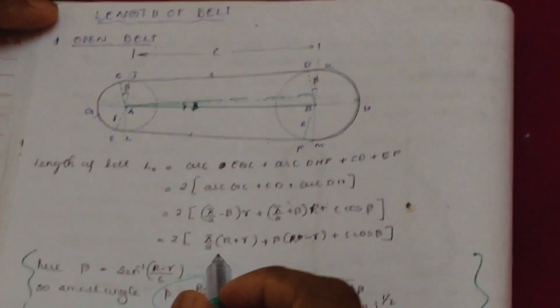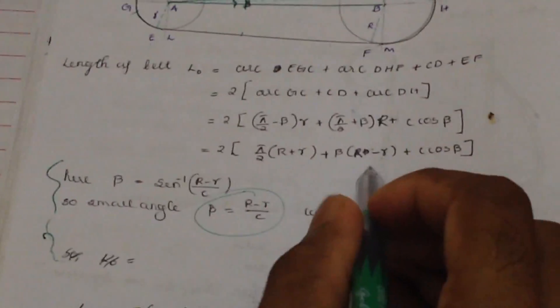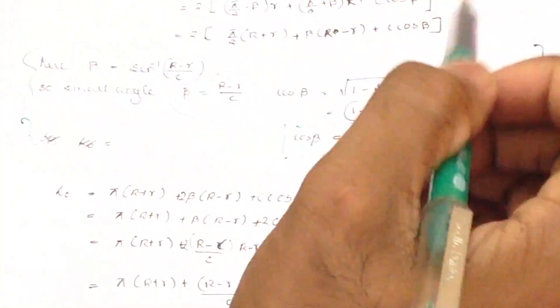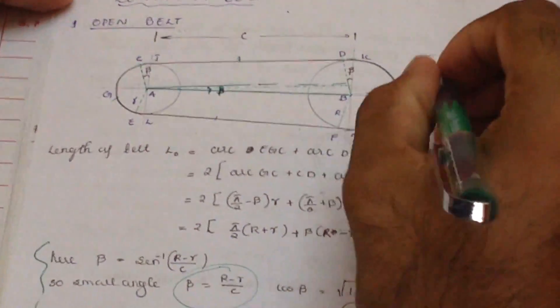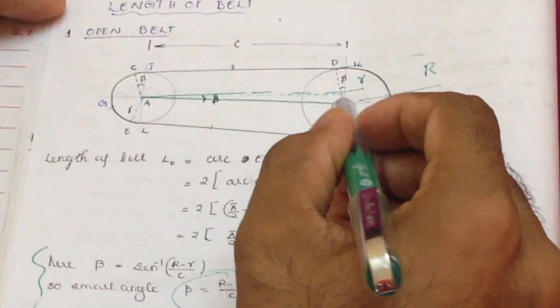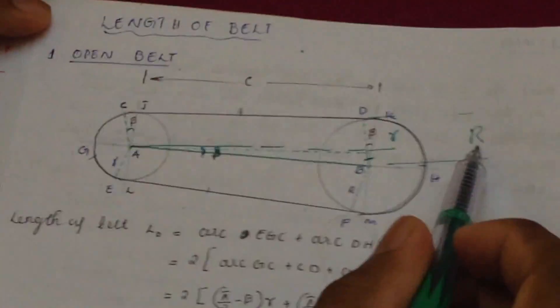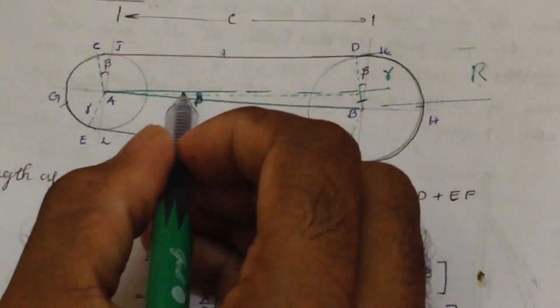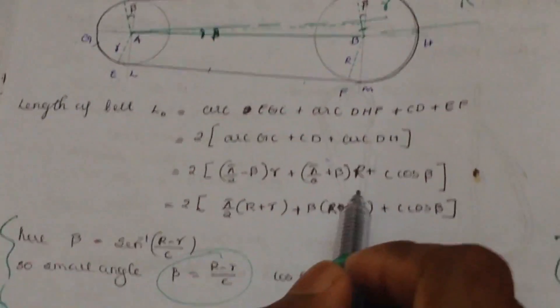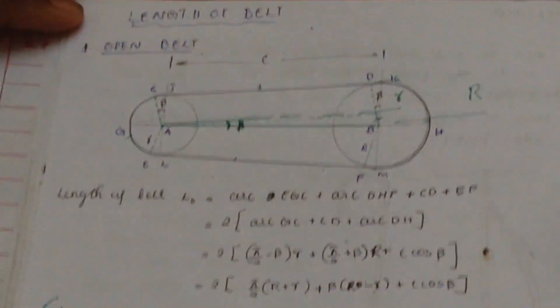Expanding, we get 2·(π/2)·r + 2·(π/2)·R − 2·β·r + 2·β·R + 2·C·cos β. From the geometry, the length CD equals C·cos β, and we can see that sin β = (R − r)/C, so C·cos β = C·√(1 − sin²β).